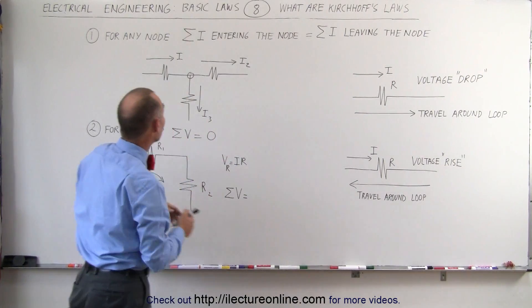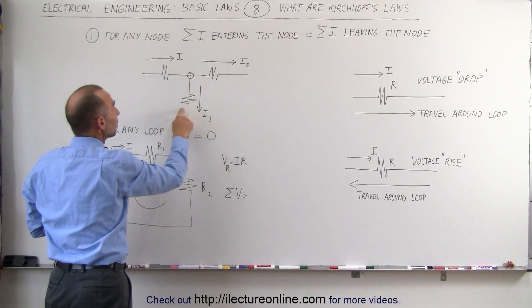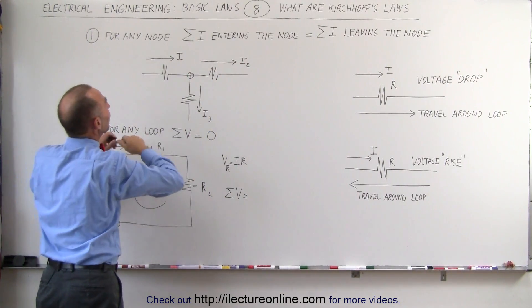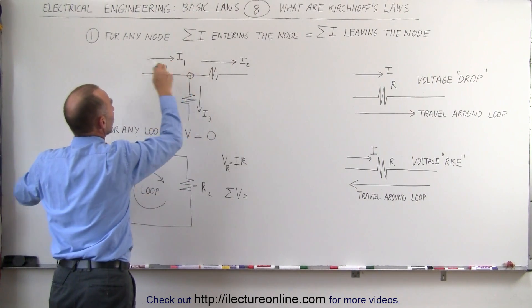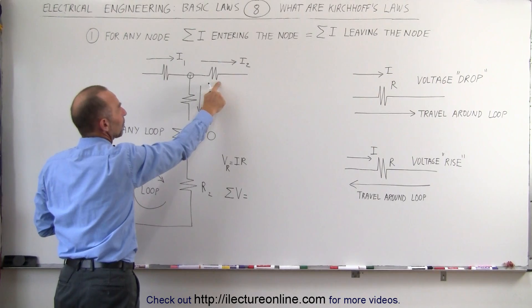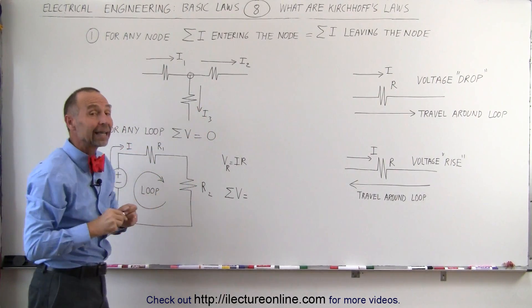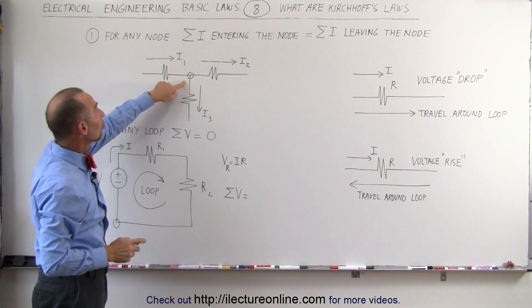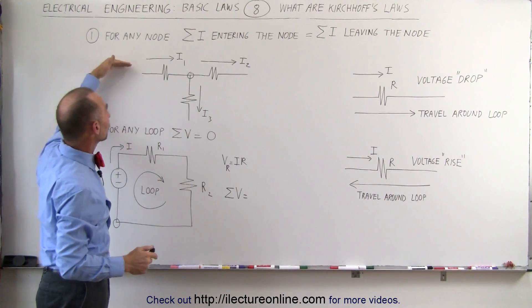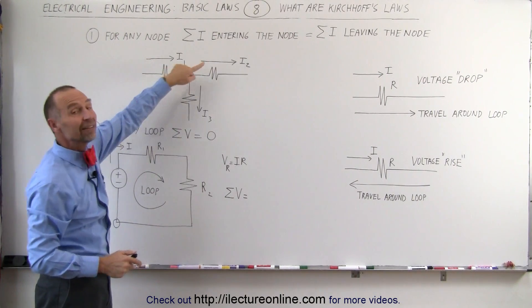In this example, let's say we have this node. We have one, two, three resistors, all three sharing the node. We have current flowing in this direction on this particular branch — let's call it I1. We have a current across this branch, let's call it I2, and a current across this branch, let's call it I3. Notice that in this case, there's only one current that is entering this node. It comes from this direction — it's I1 that enters the node, and there are two currents that are leaving the node.